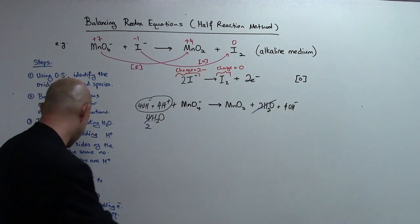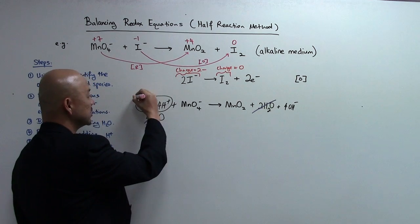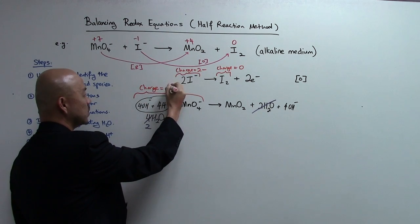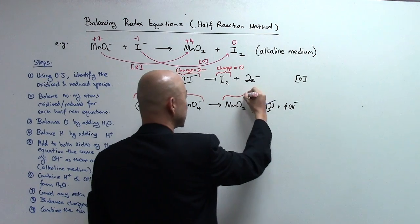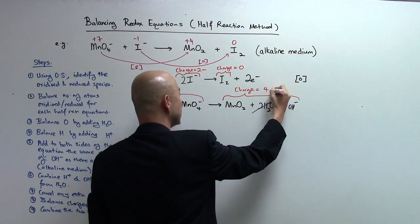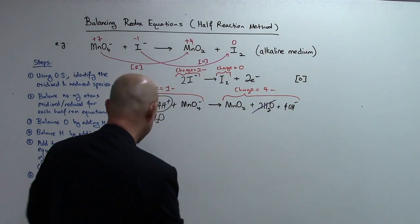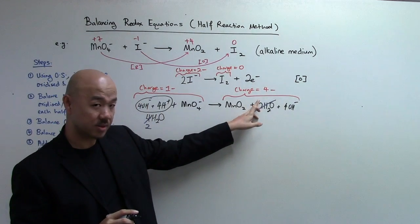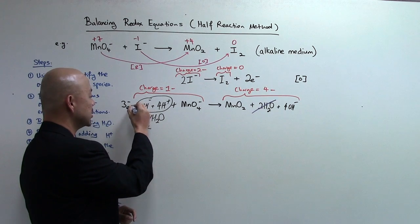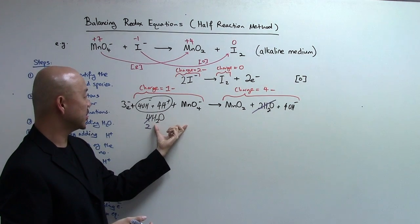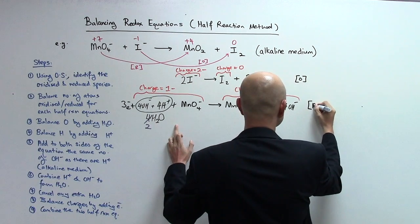Now the last step for the reduction half: balance the overall charge on both sides. On the left we have MnO4- which gives a charge of 1-. On the right we have MnO2 (neutral) plus 4OH-, giving an overall charge of 4-. To balance, since electrons are negatively charged we add electrons to the left side — 3 electrons — making the left side 3- + 1- = 4-, which matches the right side. This is our complete reduction half equation.